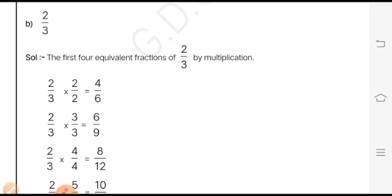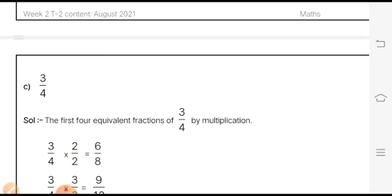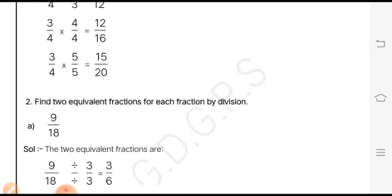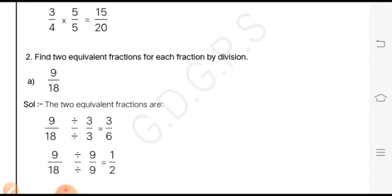Next is find two equivalent fractions for each of the fractions by division. This is one more method, and in this method we just divide both numerator and denominator by a number, apart from keeping in mind that we have...